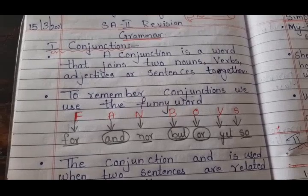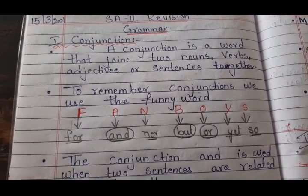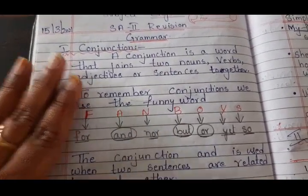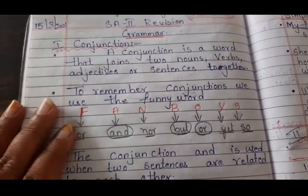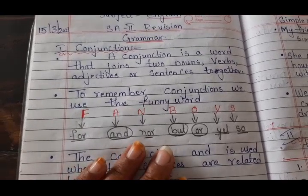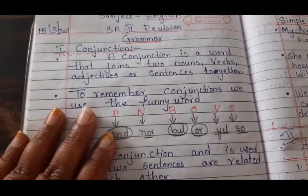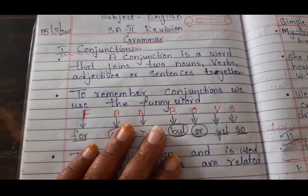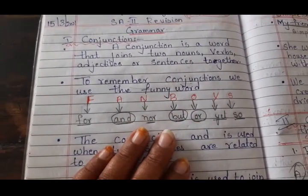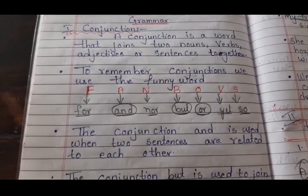To remember conjunctions we use the funny word: FANBOYS. A conjunction is nothing more than a joining word — you are joining two sentences together by using a word like and, but, or. That is known as a conjunction, children. Now you use the funny word FANBOYS to remember conjunctions. These are the common words: and, but, or — which you will use in regular writing.